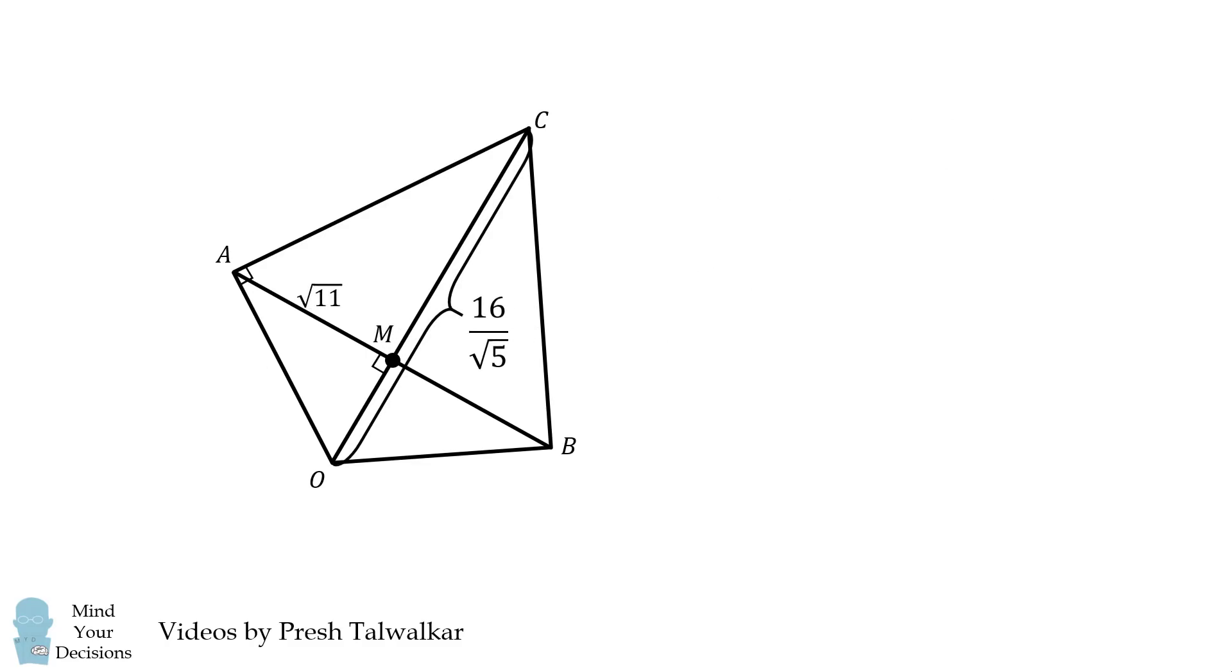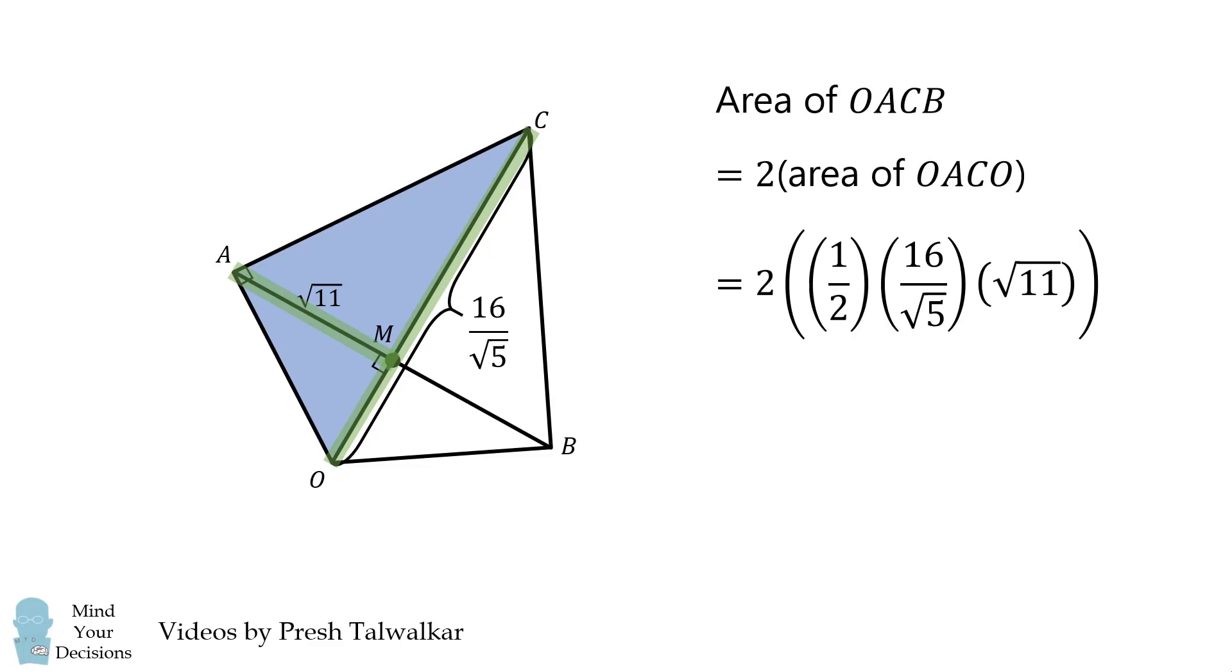From here, we can calculate the area of the kite. It'll be equal to twice the area of this triangle, and we can calculate the area of this triangle because it has a base of 16 divided by the square root of 5, and it has a height equal to the square root of 11. We substitute that in, the area of a triangle is equal to one-half its base times its height, and we get the area of the kite is equal to 16 multiplied by the square root of 11 over the square root of 5, and that's approximately 23.73, and that's the answer.